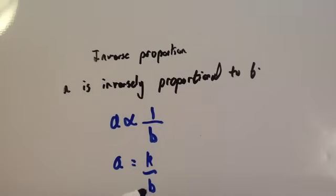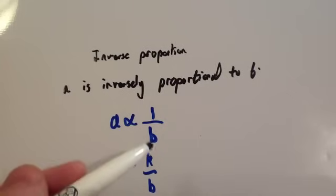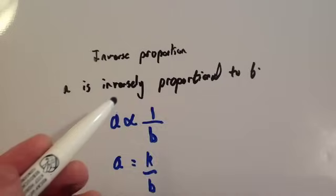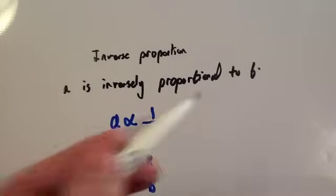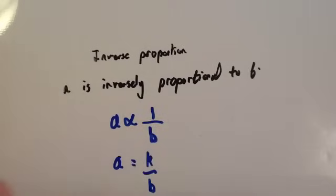Now, let's think about this. As B would get bigger, so if you divide by a larger and larger number, the result would be smaller. So, as B increases, A would decrease. So, that's why it's 1 over B. So, whenever you see inversely proportional, you put 1 over whatever is inversely proportional to.